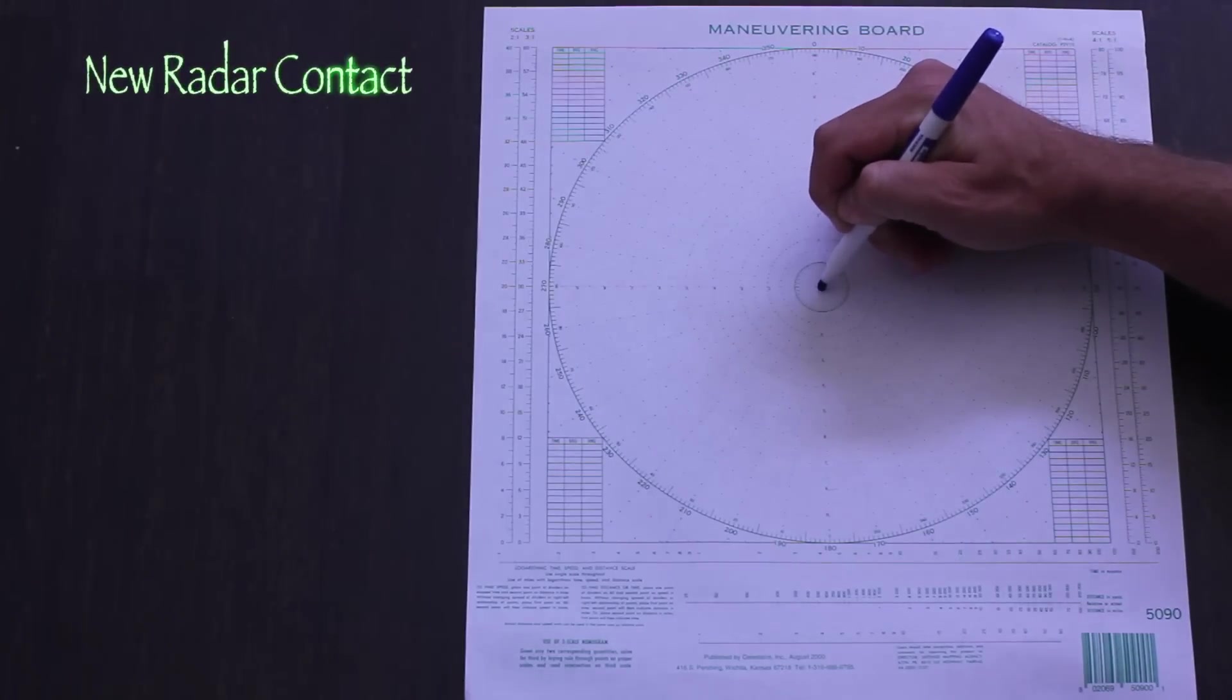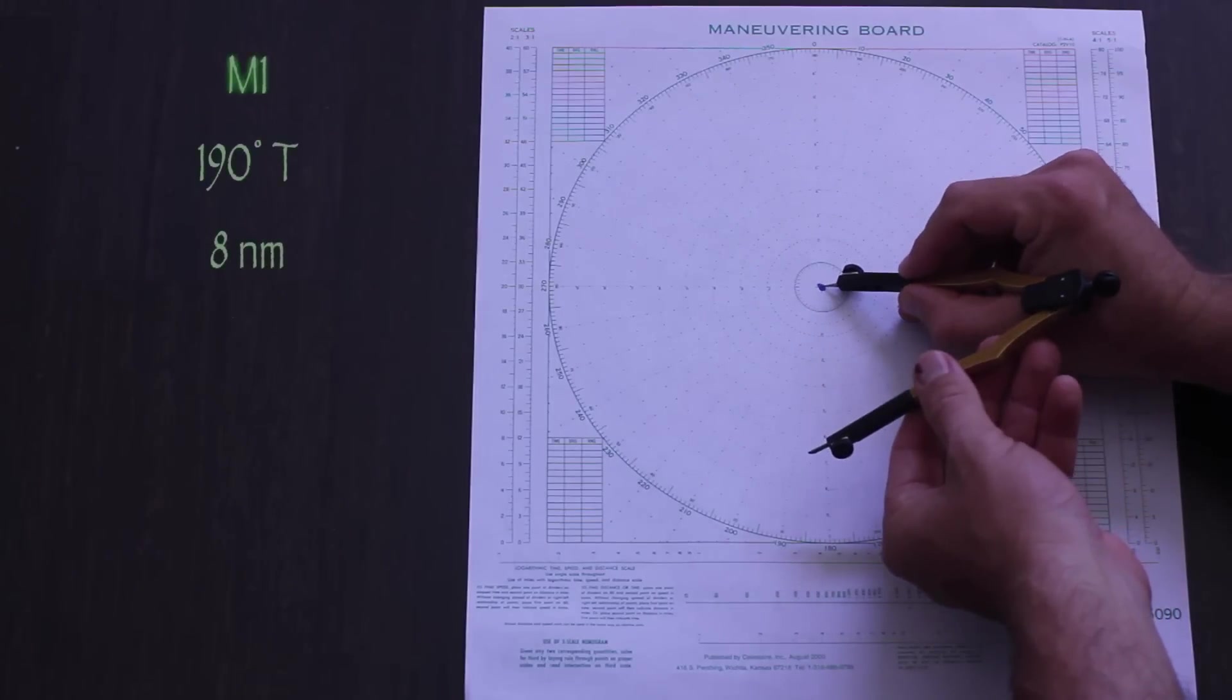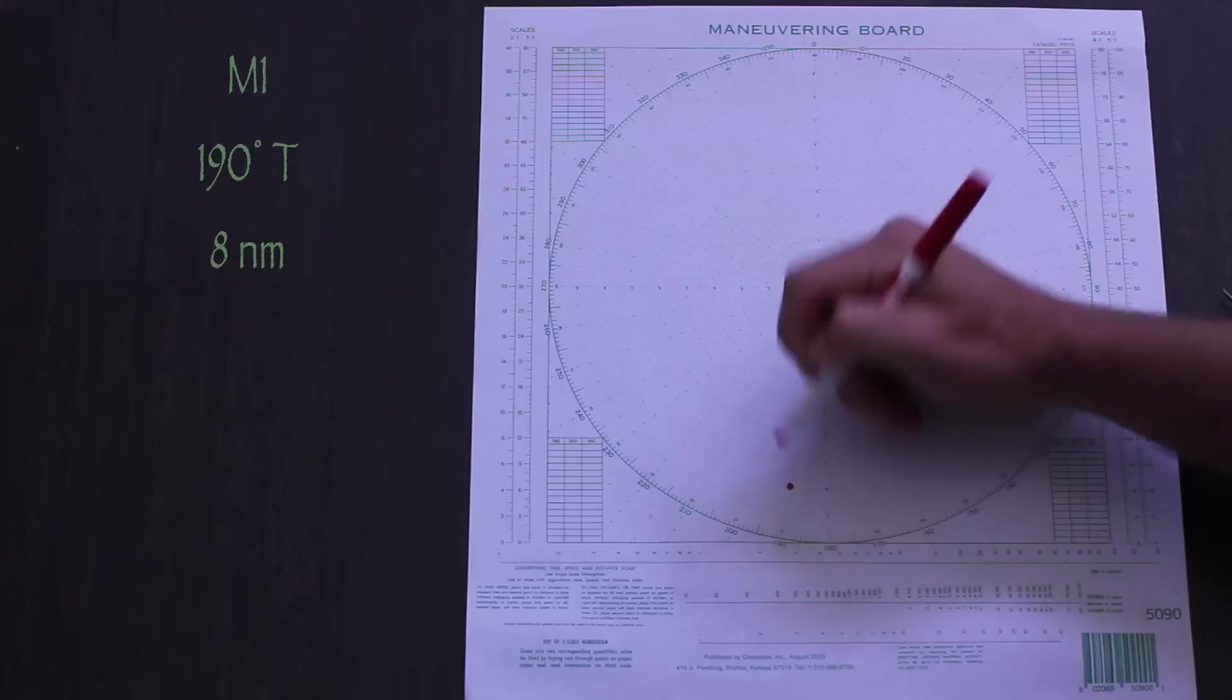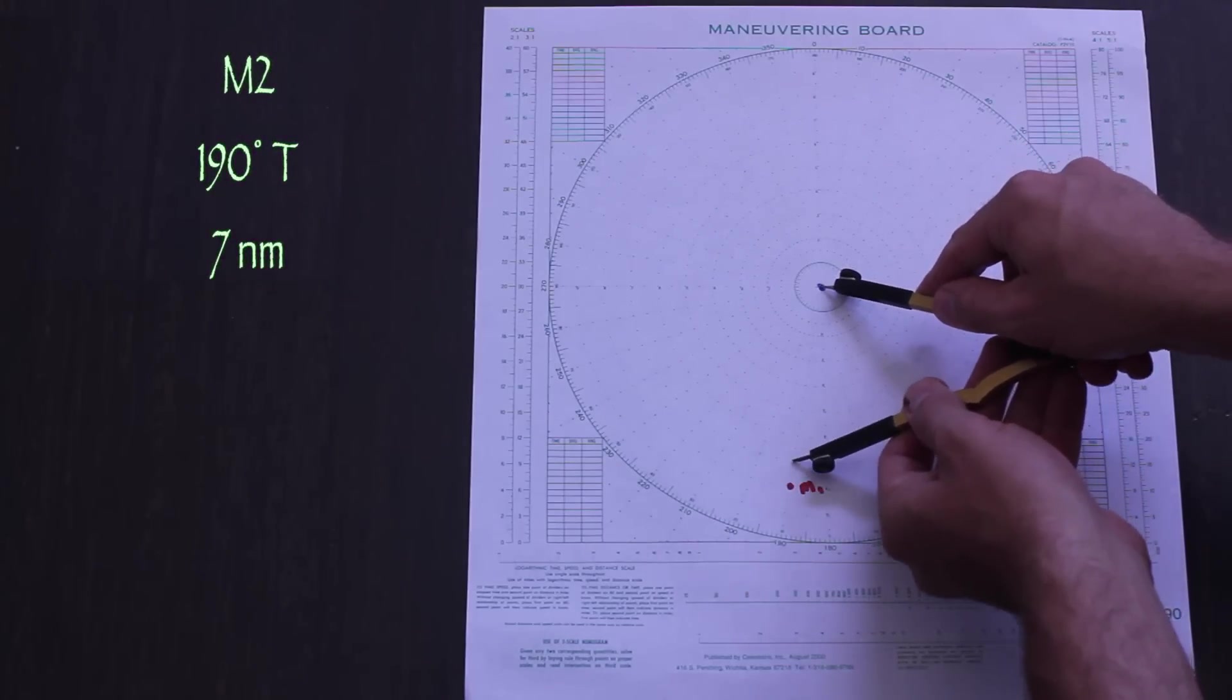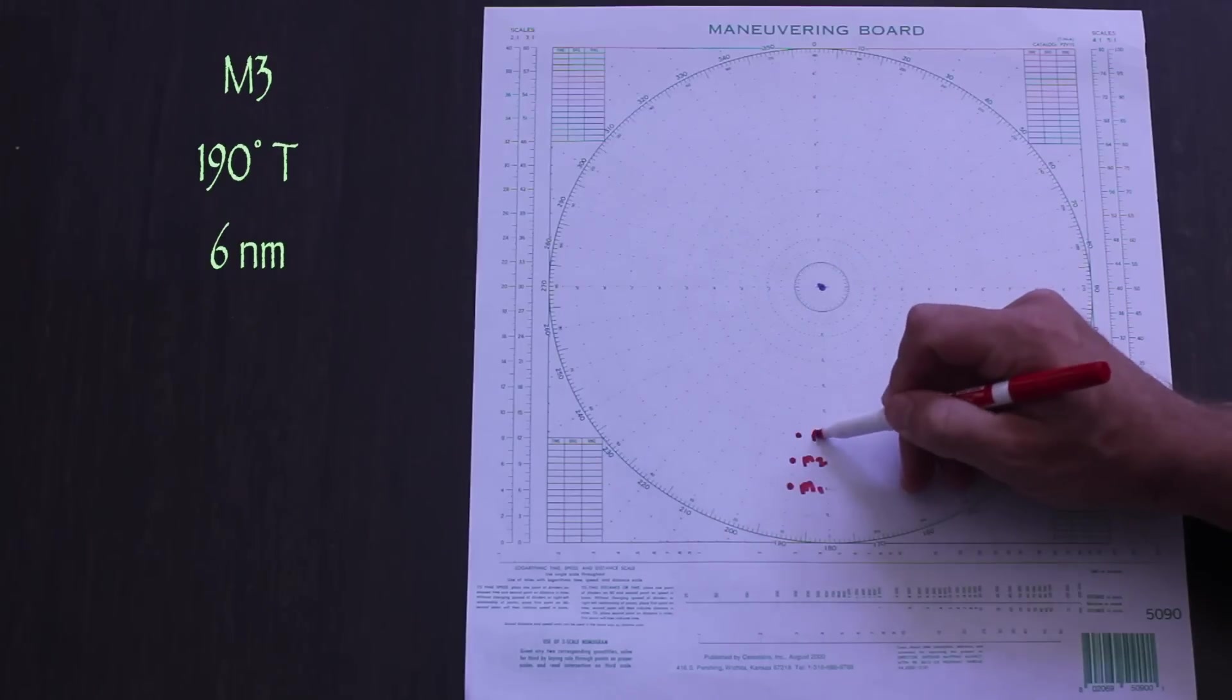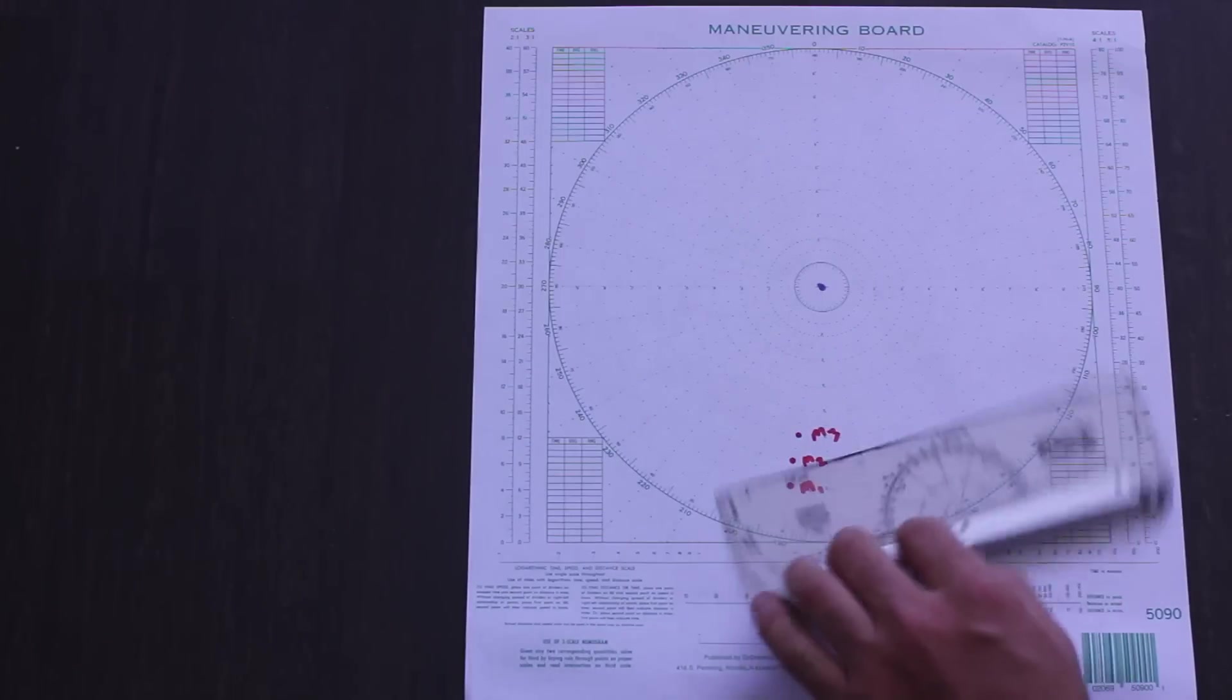Let's plot one more example. Again, we'll plot three points and label them. Then we'll draw the relative motion line, and in this case, the relative motion line comes right towards our ship in the center of the board.